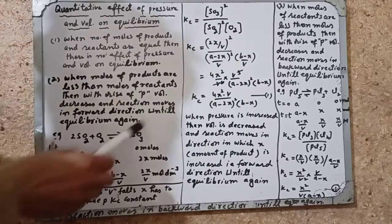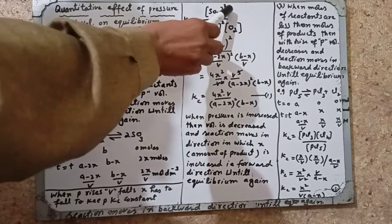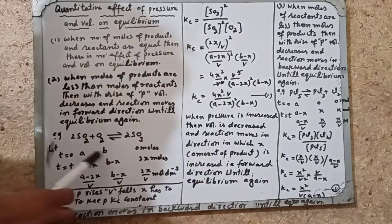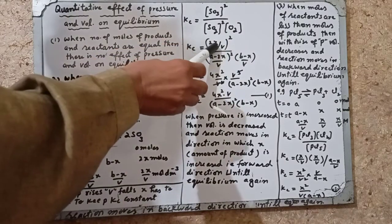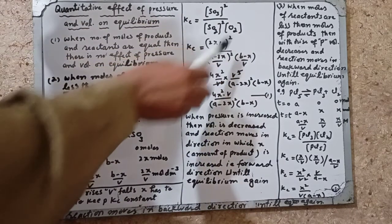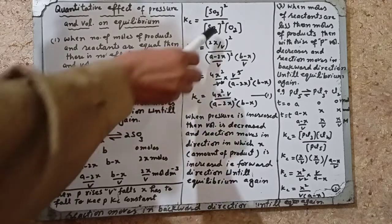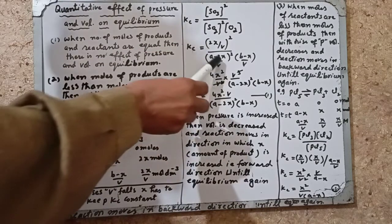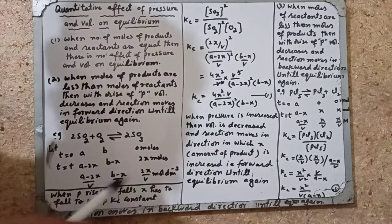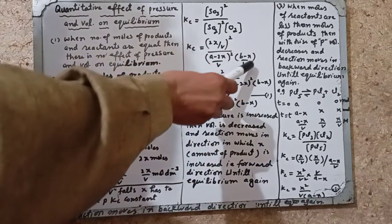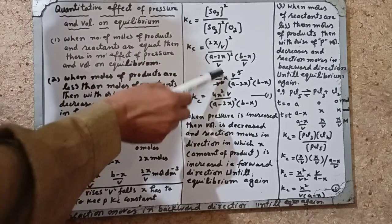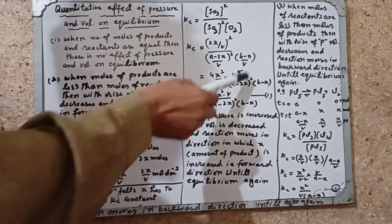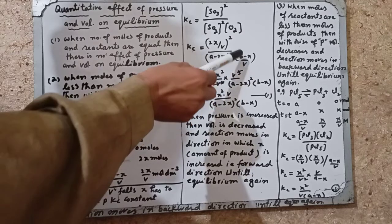Kc کی expression ہے: SO₃ کی concentration raise to 2، divided by SO₂ raise to 2 اور O₂ raise to 1۔ Values put کریں تو SO₃ کی value 2X over V ہے تو (2X/V)² آئے گا۔ SO₂ کی value A minus 2X over V ہے تو (A−2X/V)² آئے گا۔ O₂ کی value B minus X over V ہے۔ Brackets کھولیں تو numerator میں 4X² over V² آئے گا، اور V کے لیے حل کریں تو V² اور V multiply ہو کر V³ بنے گا۔